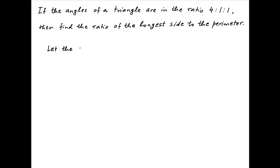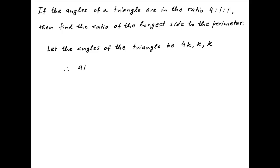We are given that the angles of the triangle are in the ratio 4:1:1. Therefore, let's assume that the angles of this triangle are 4k, k, and k respectively. Now, the sum of the angles of the triangle is equal to π. Therefore, 4k plus k plus k is equal to π, which implies that k is equal to π/6.